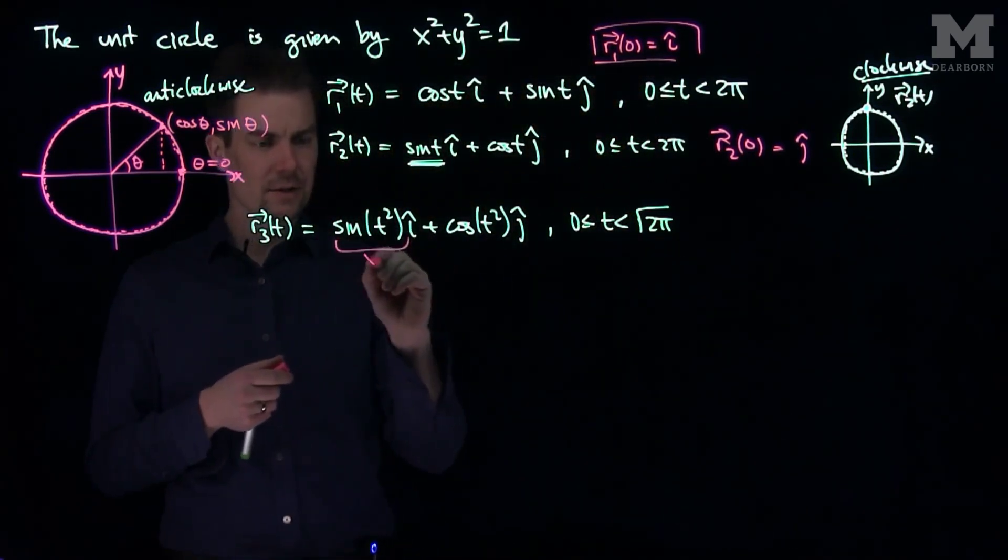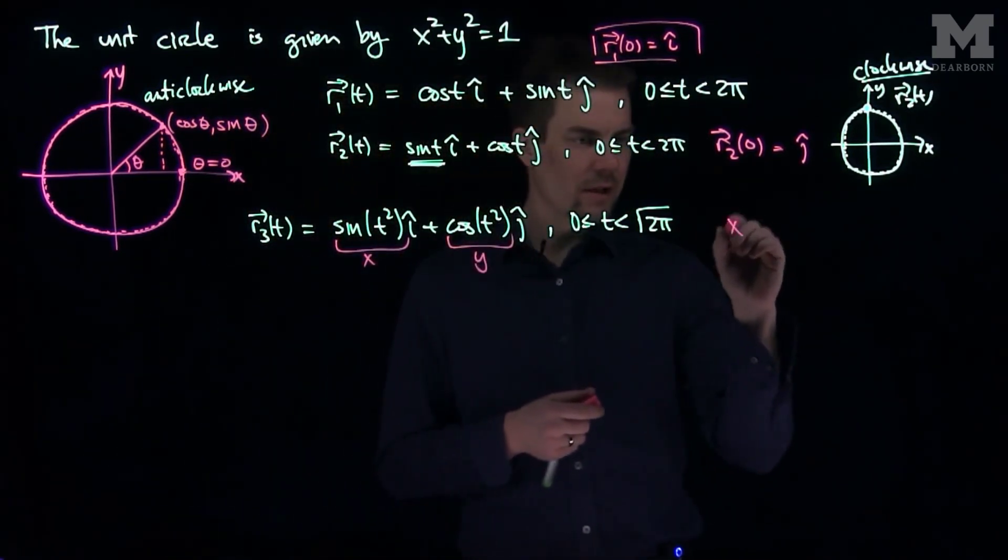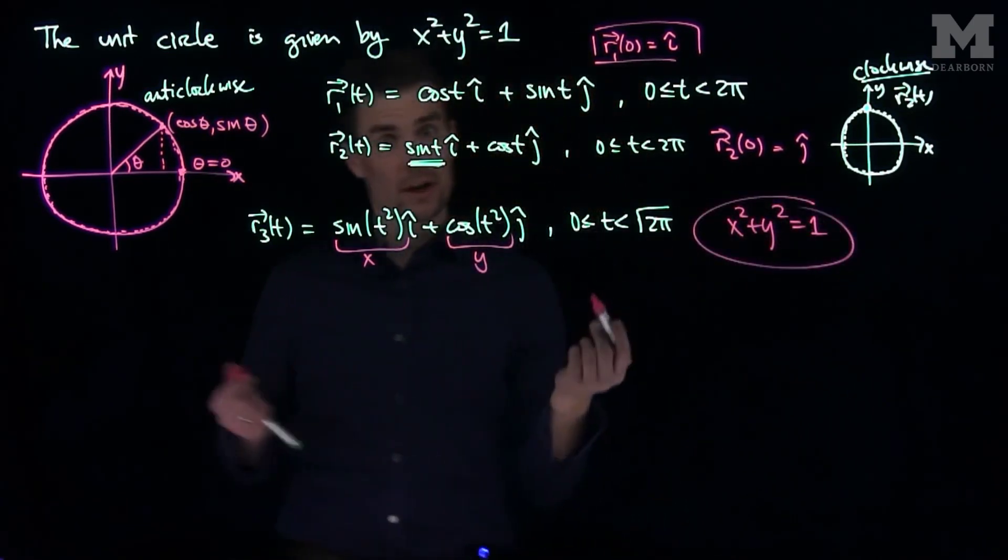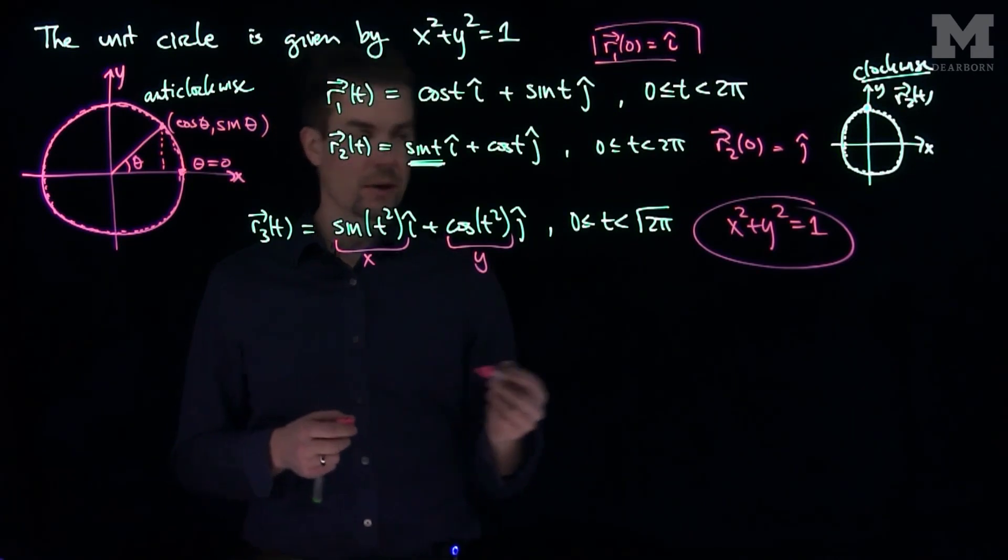For this curve over here, this is our x, this is our y, and for this curve we still have x² + y² = 1, so this will also parameterize the unit circle. It will move at a different speed though.